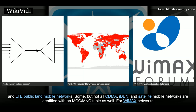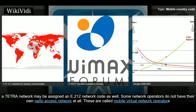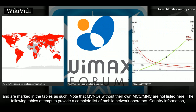For WiMAX networks, a globally unique broadband operator ID can be derived from the MCC/MNC tuple. TETRA networks use the mobile country code from ITU-T Recommendation E.212 together with a 10-bit binary mobile network code; however, a TETRA network may also be assigned an E.212 network code. Some network operators do not have their own radio access network — these are called mobile virtual network operators (MVNOs).